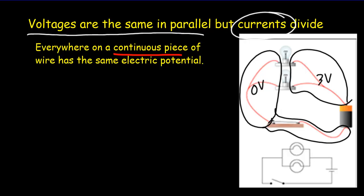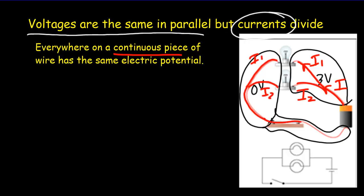Now it's the current that splits. The current comes out of the battery and it'll split up - some will go through one light bulb, some will go through the other. Of course, I coming out of the battery equals the sum of I1 and I2, and then the currents rejoin and it'll be I as the current going back into the battery.